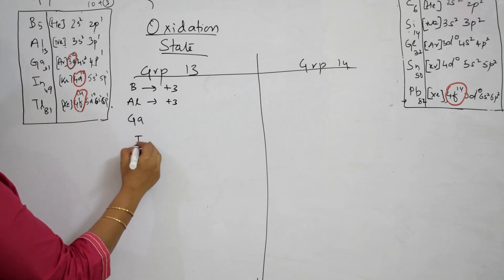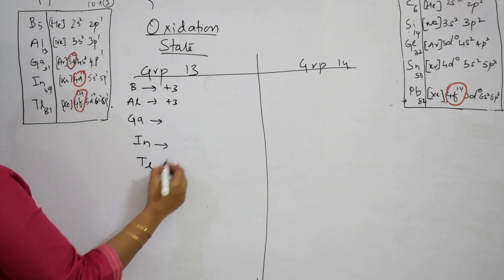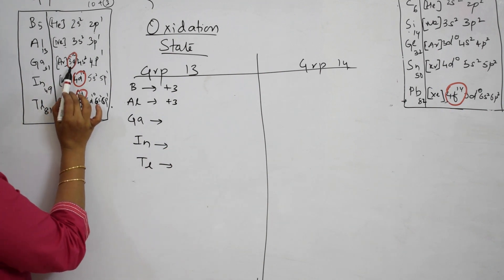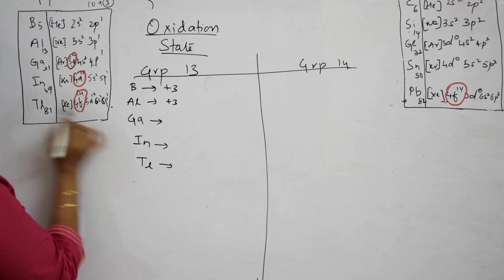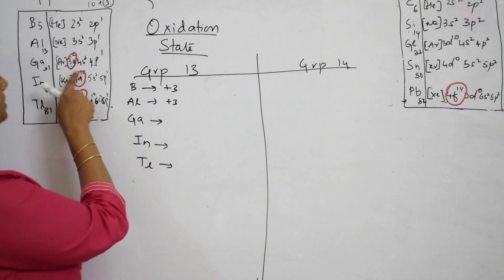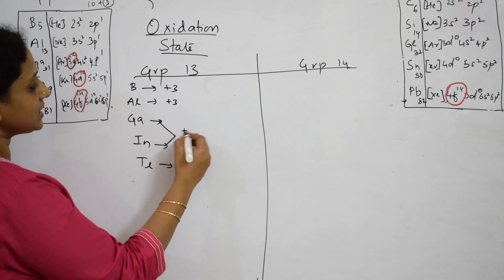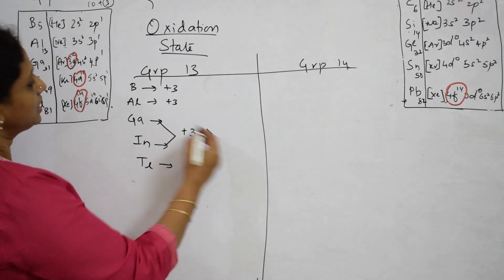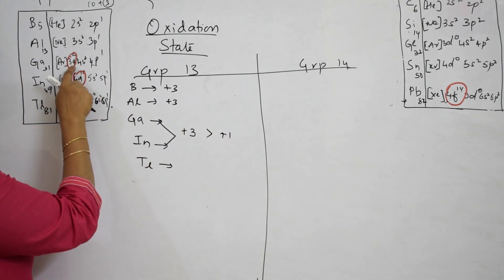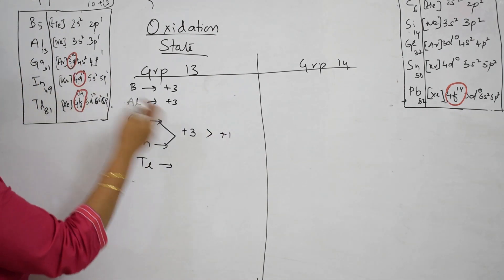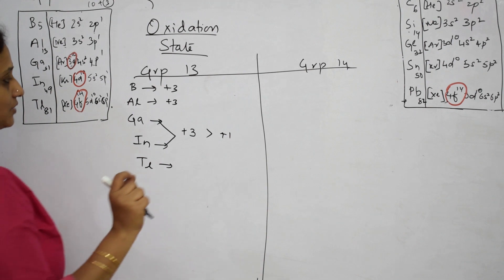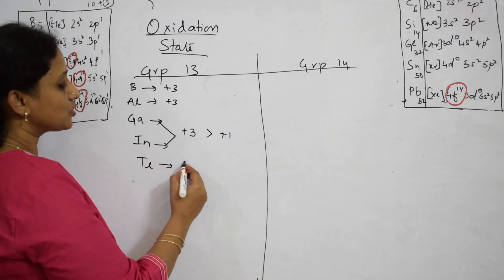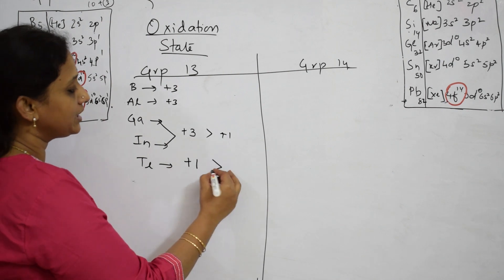When I come to gallium, indium, and thallium, we must be careful. In gallium, indium, and thallium, there is the existence of a completely filled 3D shell, 4D subshell, and 4F subshell respectively. In gallium, the +3 state dominates more than the +1 state. But when we come to thallium, instead of +3, it is going to show only +1 state — plus 1 will dominate more than the +3 state.